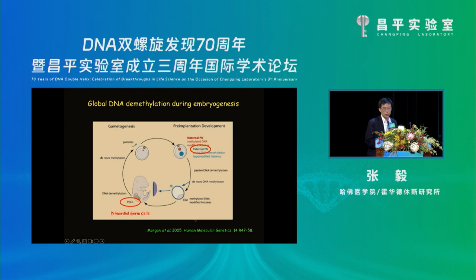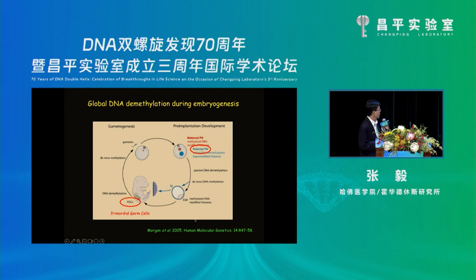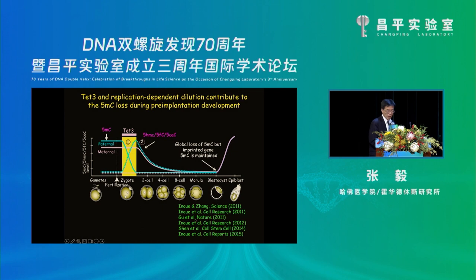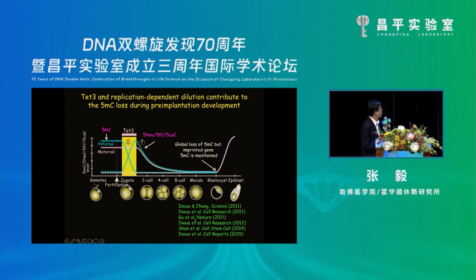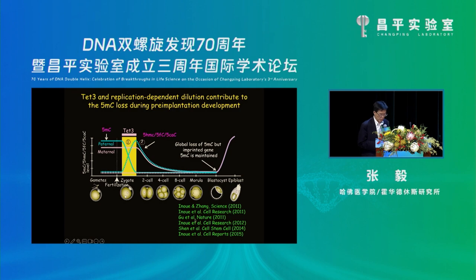We then went on to study biological function during embryonic development. There are two stages where global demethylation takes place: one is the zygote, and the other is during PGC migration through the genital ridge. We found, as did Cornell's group, that TET3 oxidizes 5-methylcytosine — but doesn't directly remove it — generating hydroxymethyl, formyl, and carboxylcytosine. Then through replication-dependent dilution, methylation reaches a low level by the blastocyst stage, where only imprinted genes are still maintained methylated.